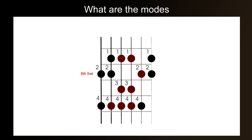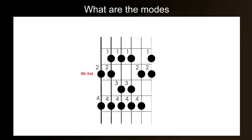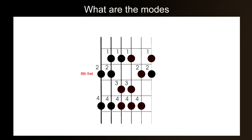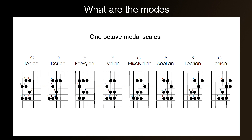Then the next scale up would be from A to A, and this would be the Aeolian scale. The final scale would go from B to B, and that would be the Locrian scale. At this point, it's worth reminding you that even though each of these scales is different, they're still all in the key of C.